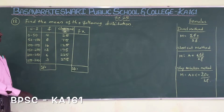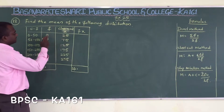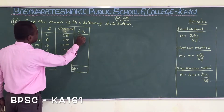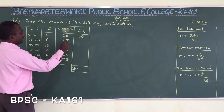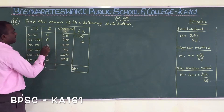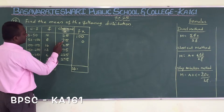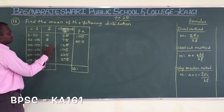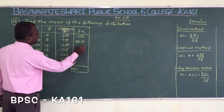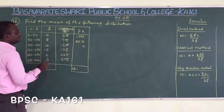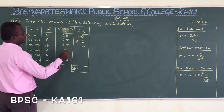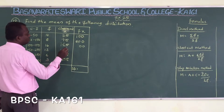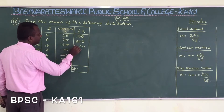Now we have to multiply f and x to get the product fx. So 25 × 4 = 100. Next 85 × 40 gives 560 + 40 = 600. Then 125 × 16: 16 × 5 = 80, 16 × 2 = 32, so that gives 2000.